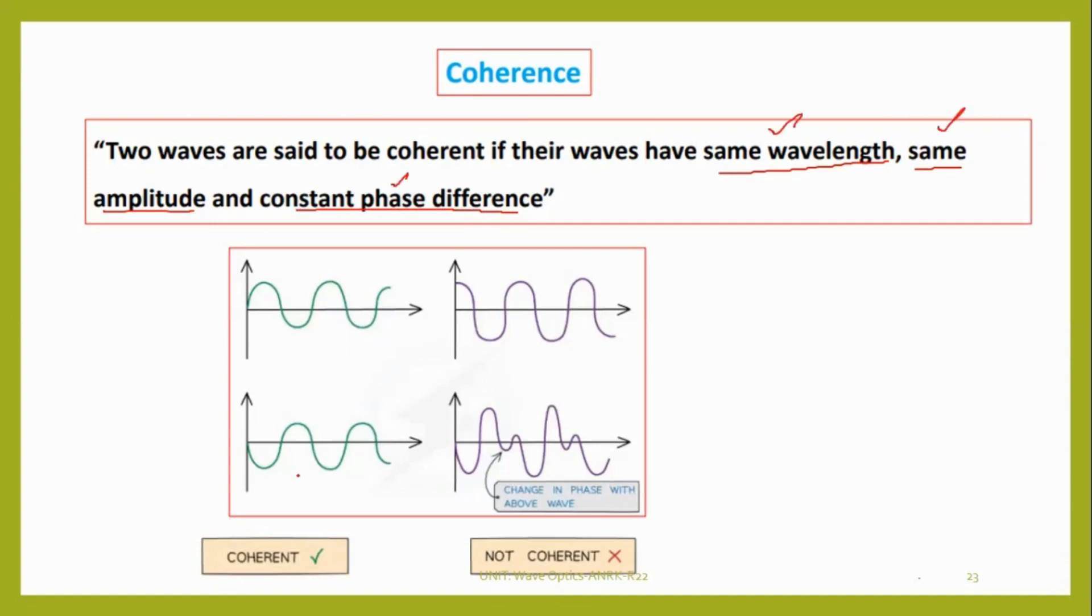Whenever we observe these two green waves, these two waves have the same wavelength, same amplitude, but phase difference is 90 degrees. One is moving in positive direction, another is moving in negative direction. Even though they are out of phase, we will say these two waves are coherent.